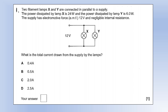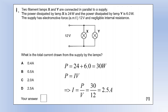In this video I'm going to review the electricity mock exam. Starting with multiple choice questions: X and Y are connected in parallel to a supply. Power dissipated by lamp X is 24 watts, power dissipated by lamp Y is 6 watts, EMF is 12 volts with negligible internal resistance. To find the total current drawn: add the total power dissipated, then divide by the EMF. That gives option D.